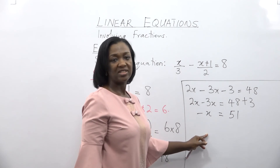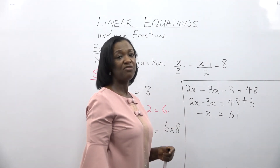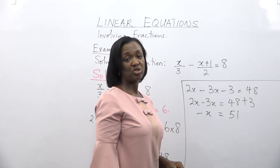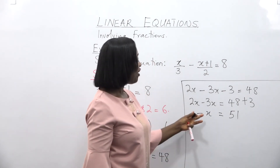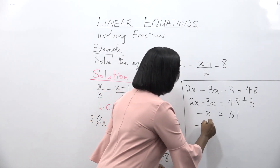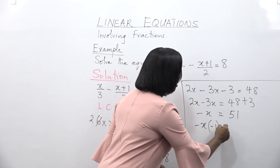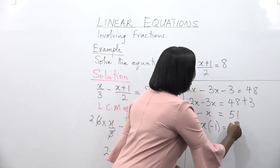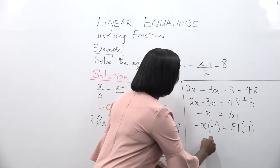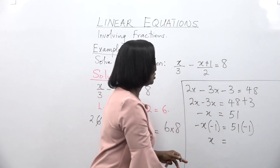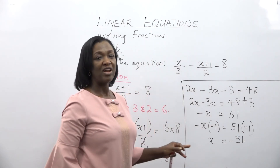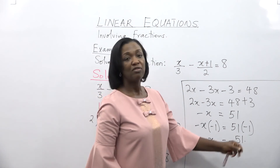So 2x minus 3x is minus x, equal to 48 plus 3, which is 51. But this is negative x, and we want a positive value of x. So we multiply both sides by minus 1. It becomes minus x times minus 1 is equal to 51 times minus 1. So the value of positive x is minus 51.